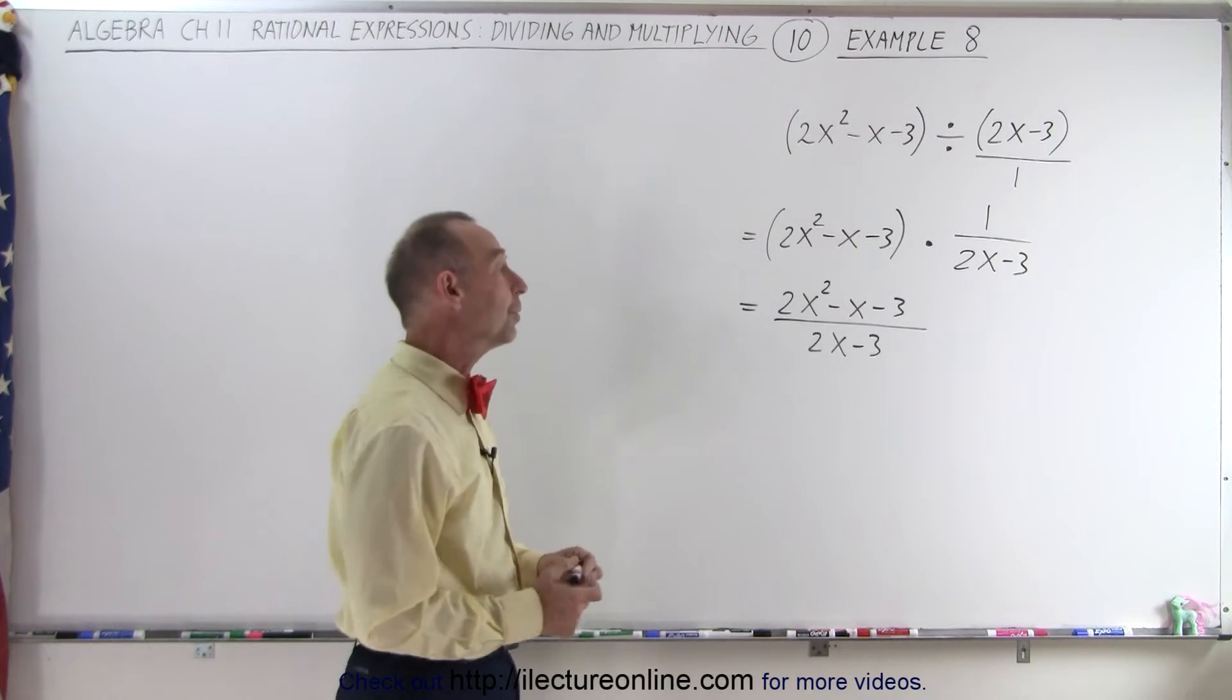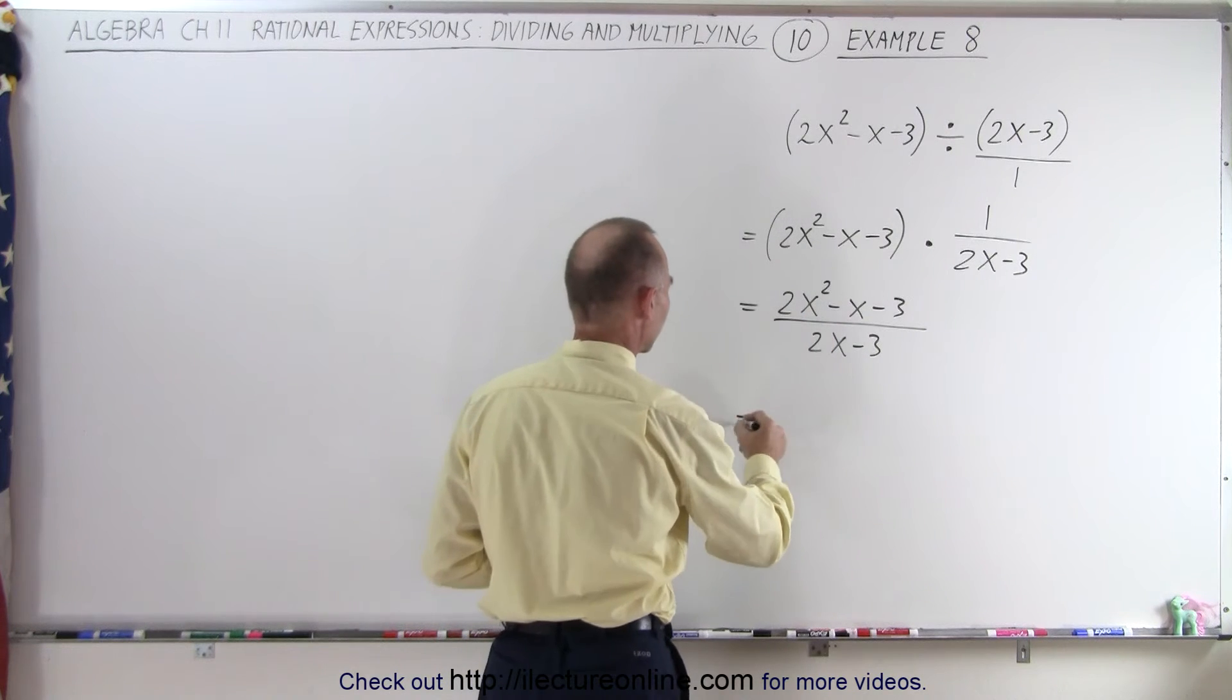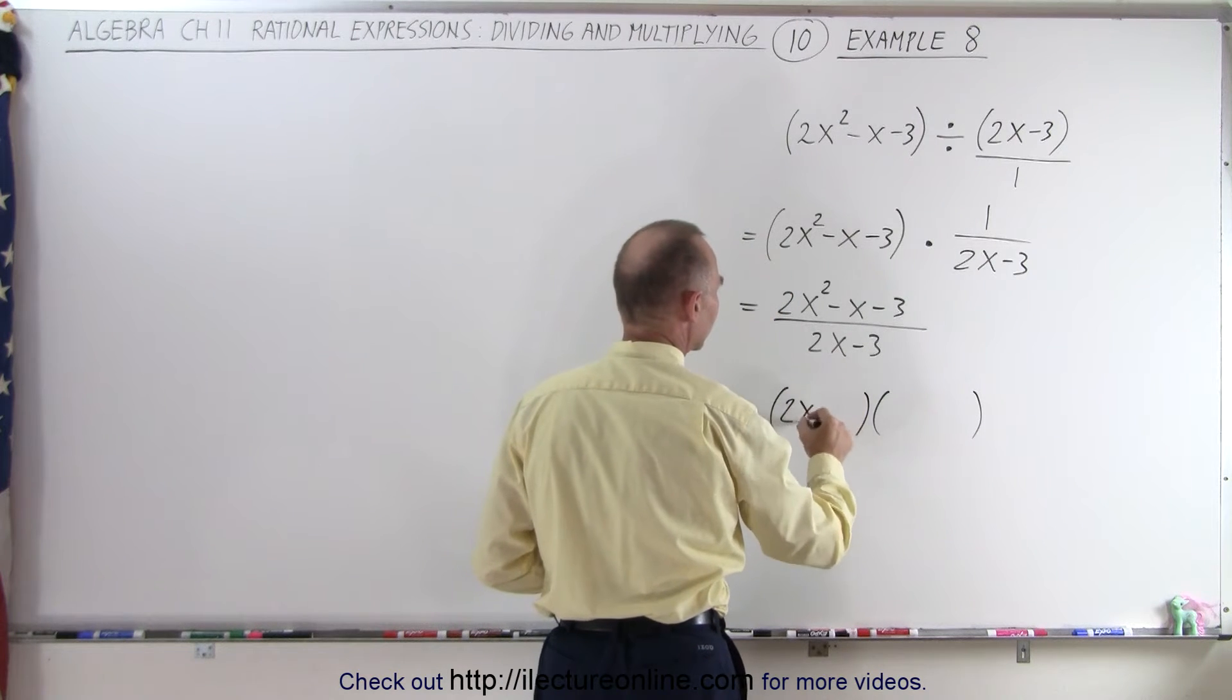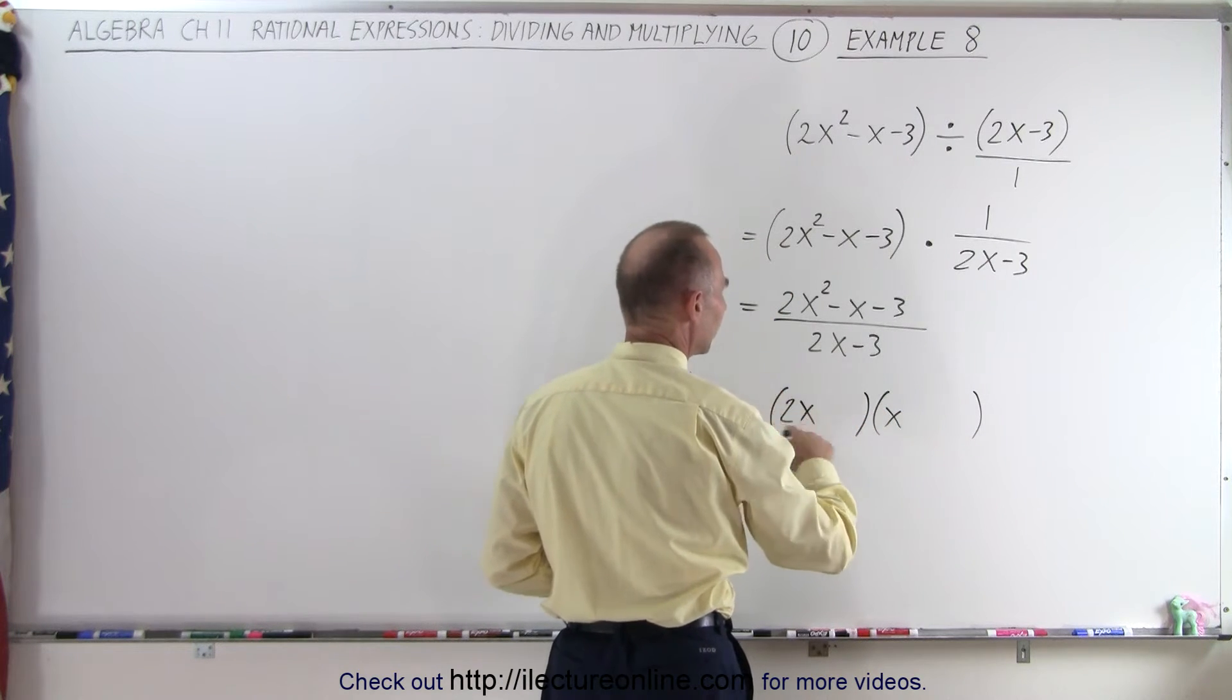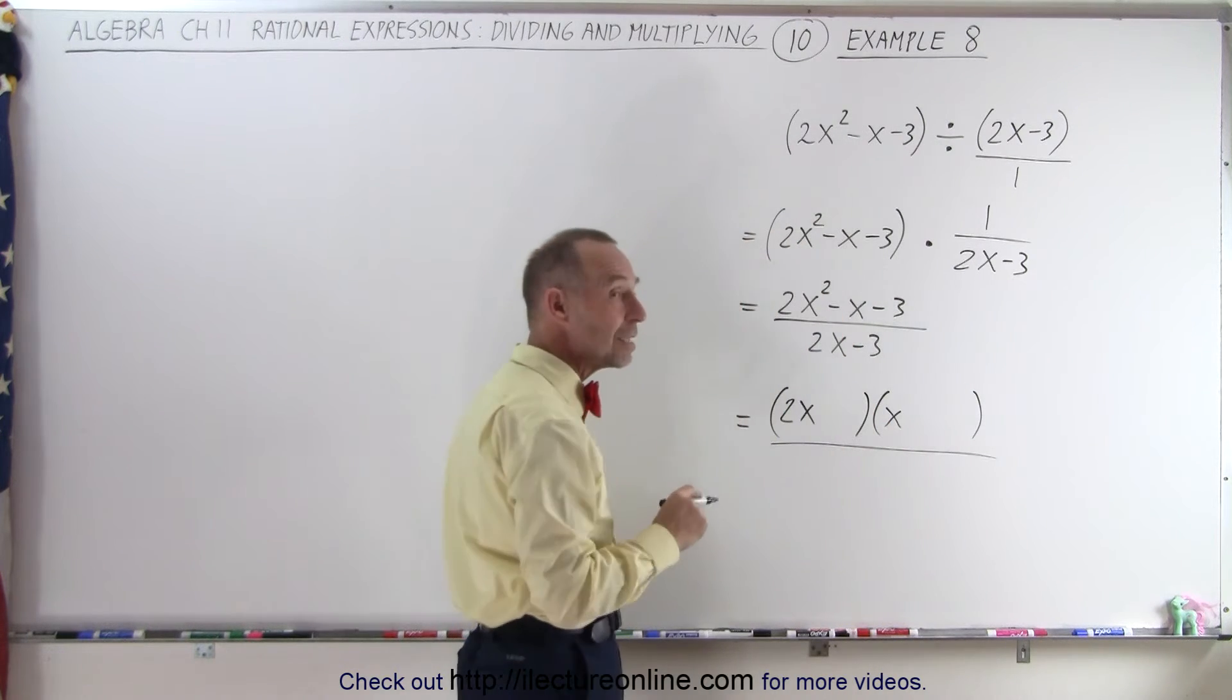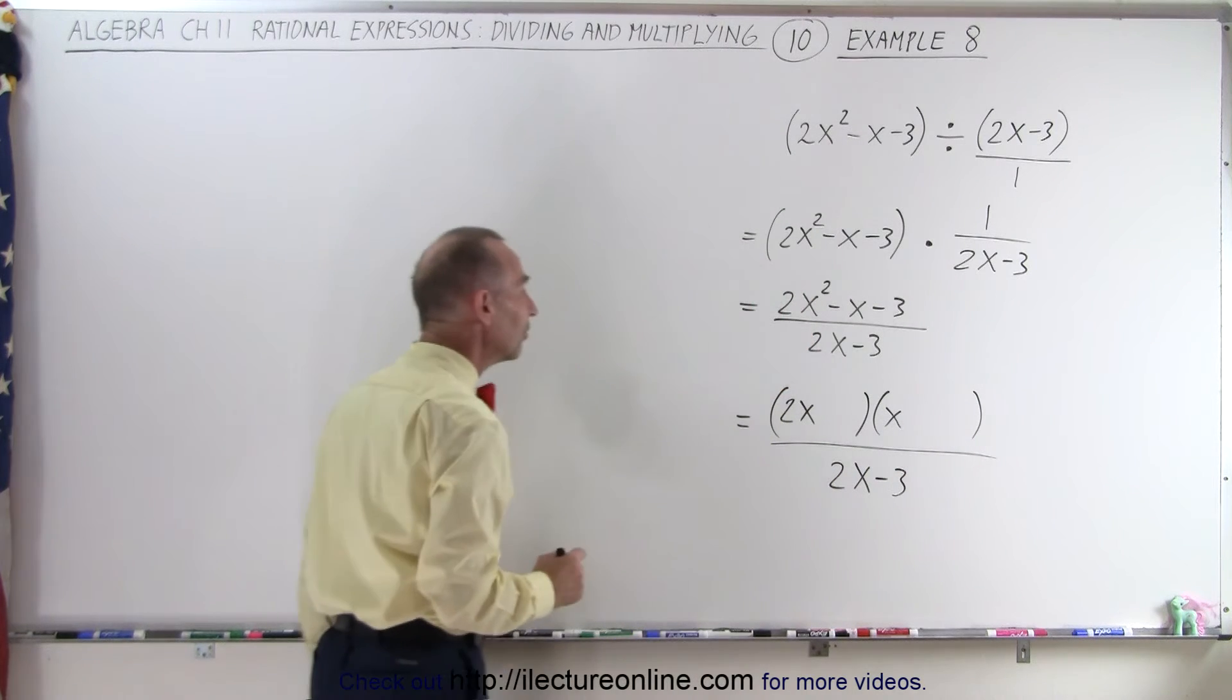Now we get to this point, we need to factor the numerator. And so it'll probably look something like this, the product of two binomials, and we're going to need a 2x and an x. But to find the other numbers here, we may want to use the FOIL method. So for those who like to use the FOIL method, let's go ahead and see how that would be done.